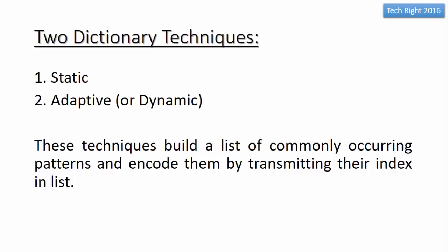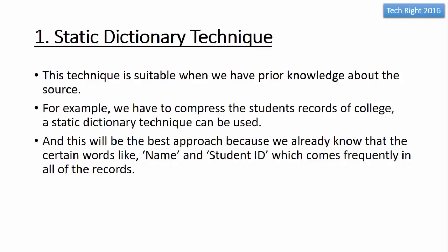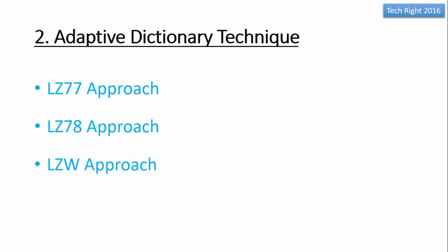First we will see the static dictionary technique. This technique is suitable when we have prior knowledge about the source. For example, if we have to compress student records of a college, static dictionary technique can be used here. This will be the best approach because we already know that certain words like name and student ID occur frequently in all records.